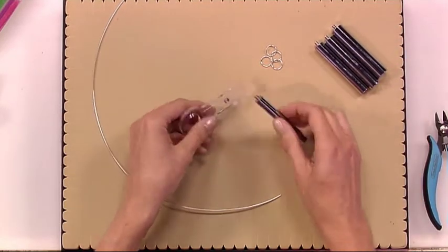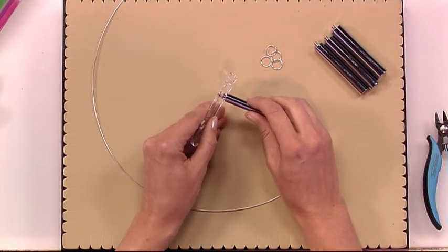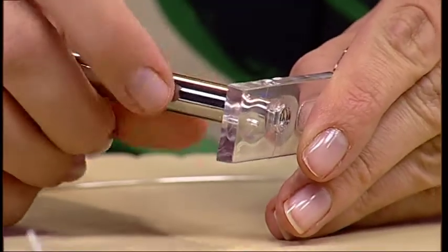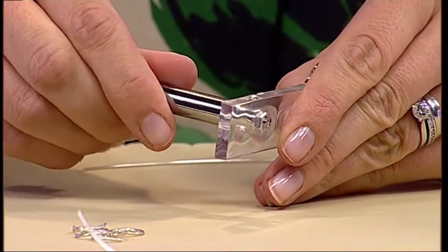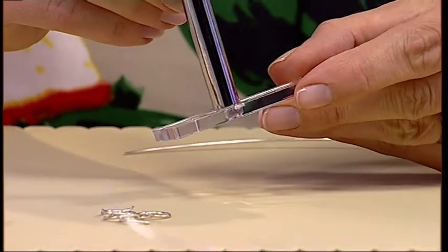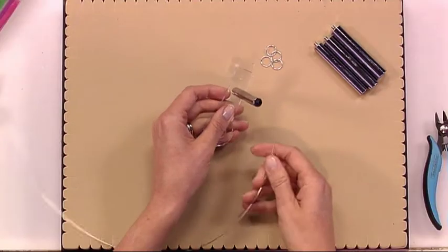So you screw in the mandrel to the perspex key like that, and taking your wire, I've got a one millimeter wire.